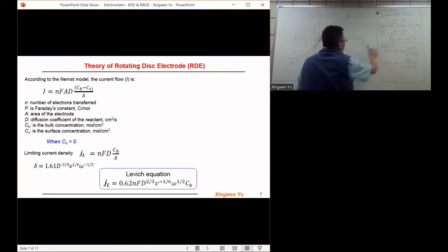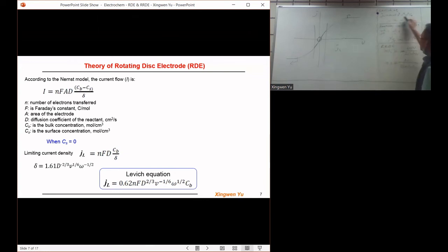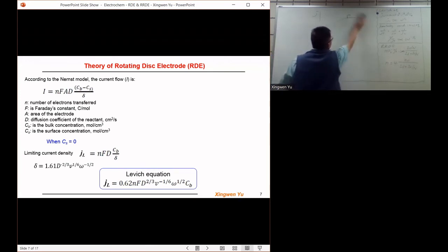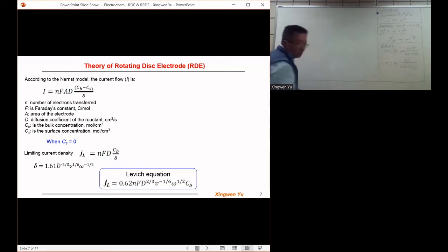I can show you how to memorize this equation easily. We are electrochemists. Whenever we talk about the Levich equation, we have j_L, 0.62, nF, D, ν, ω, C.